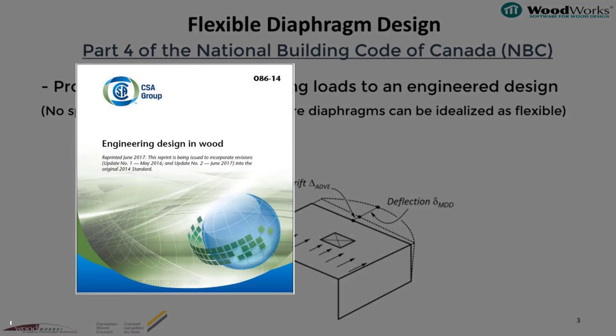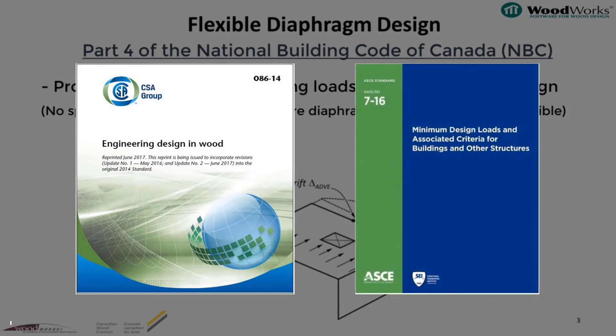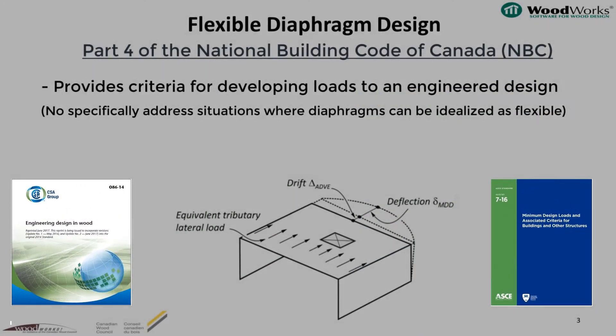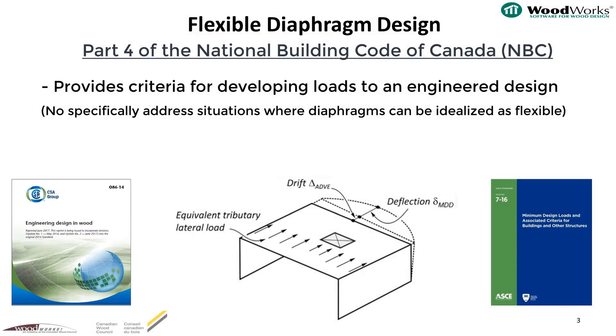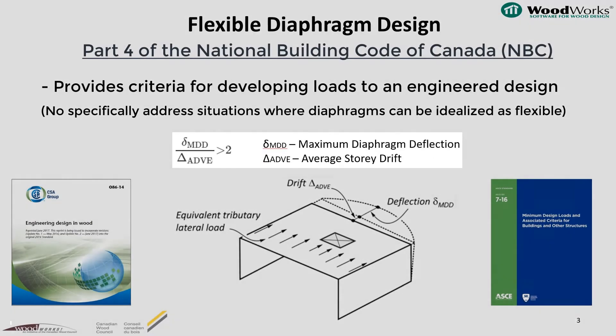CSA 086 Commentary and the American Society of Civil Engineers 7-16 both provide guidance for when a diaphragm may be idealized as flexible. The equation shown here indicates that if the maximum diaphragm deflection is greater than two times the average shear wall story drift, then the diaphragm can be idealized as flexible.